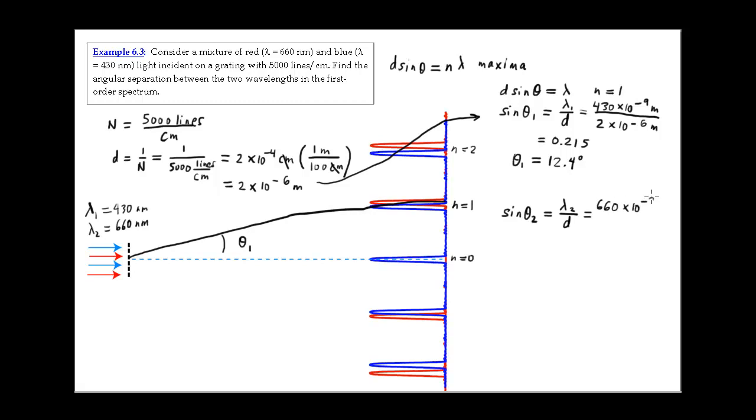660 times 10 to the minus 9 meters over 2 times 10 to the minus 6 meters. Evaluating that we get 0.330 and then taking the inverse sine gives us the angle 19.3 degrees.